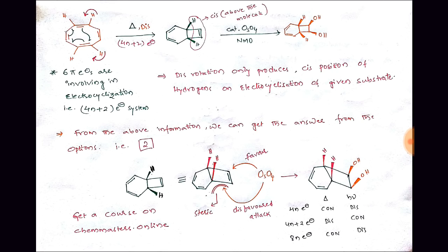Looking at the product, the two hydrogens are projecting towards us — they are above the plane of the given product. That means they are projecting towards us and they are in a cis position.